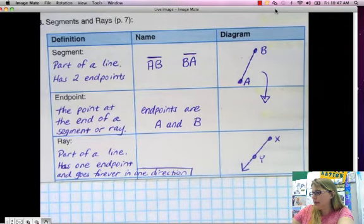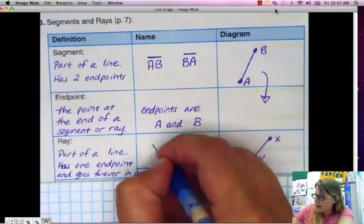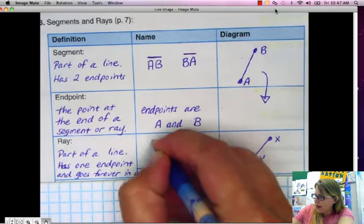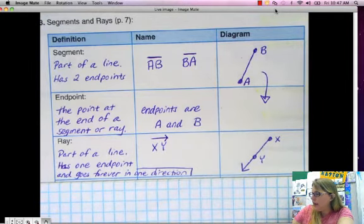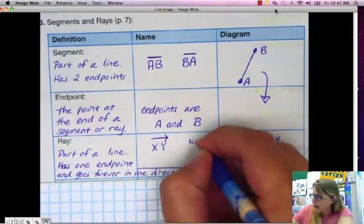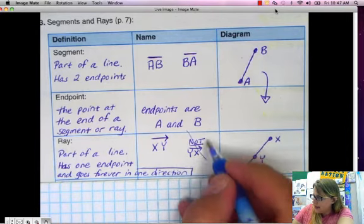And to name this ray we start, we have to name it X and then Y and then the symbol above it is a little baby ray. Okay now this is not YX. Okay that is not the case. That's not YX.